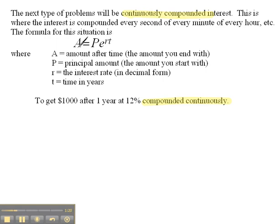A is your amount after time. P is your principal or your starting amount. R is the interest rate, always written in decimal form. And T is your time in years.